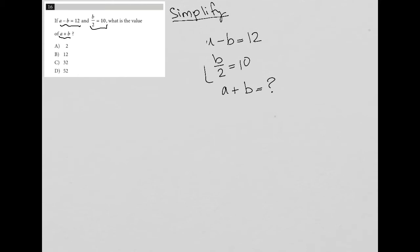So this is what I mean. When I look at A minus B equals 12, there's no way to simplify that, right? A minus B equals 12, there's no like terms, there's nothing I can do there. When I look at B divided by 2 equals 10, there actually is something I can do. I can solve for B.